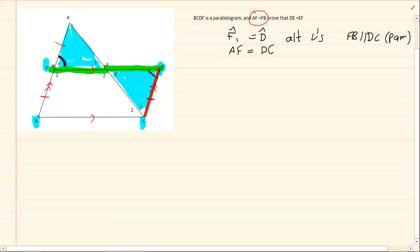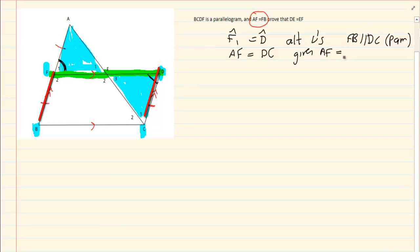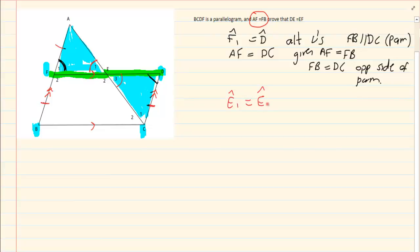Now, then I know that AF is going to equal to DC. How do I know that AF is equal to DC? Because it was given that AF is equal to FB. But also that FB is equal to DC. Why is FB equal to DC? Opposite sides of a parallelogram are equal. So now that is two things that I've got. Then look at this.